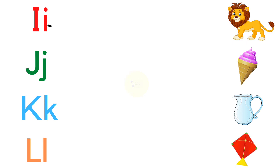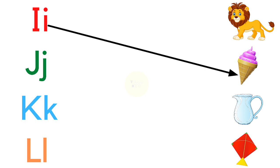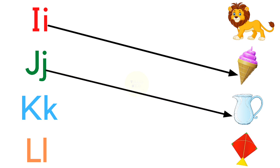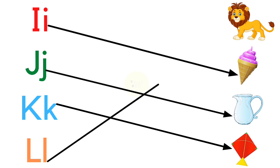I for Ice Cream, J for Jug, K for Kite, L for Lion.